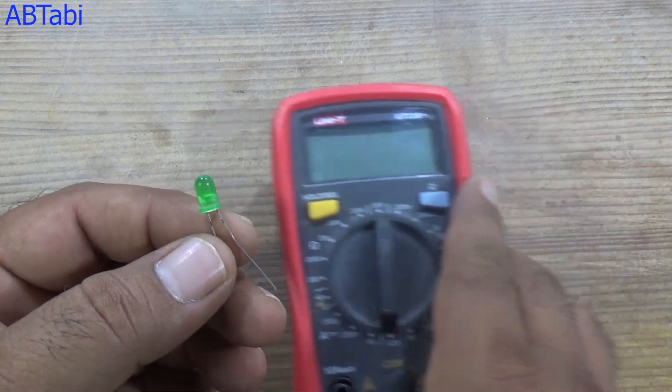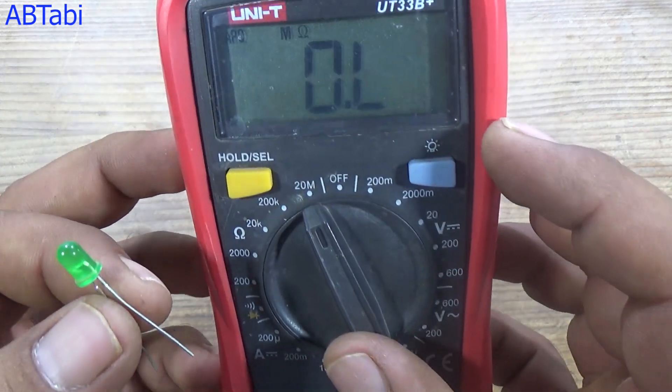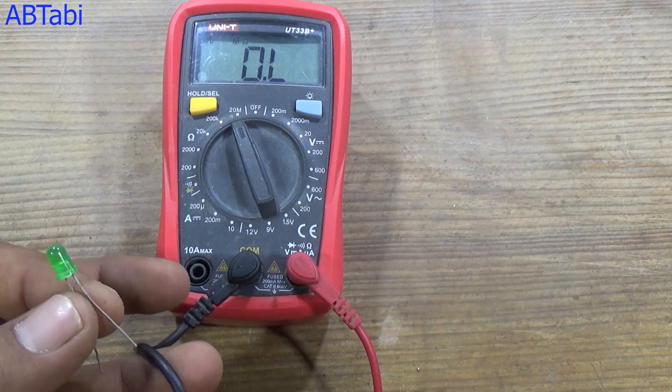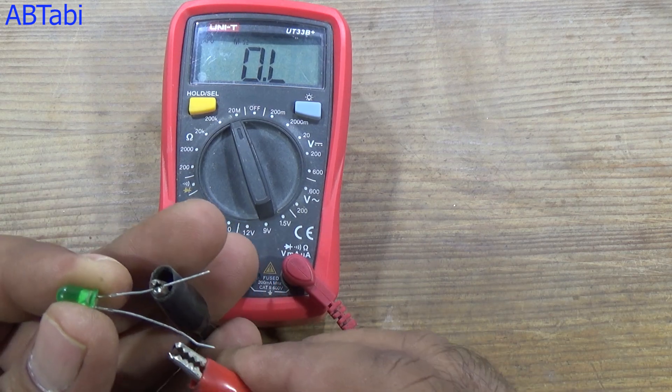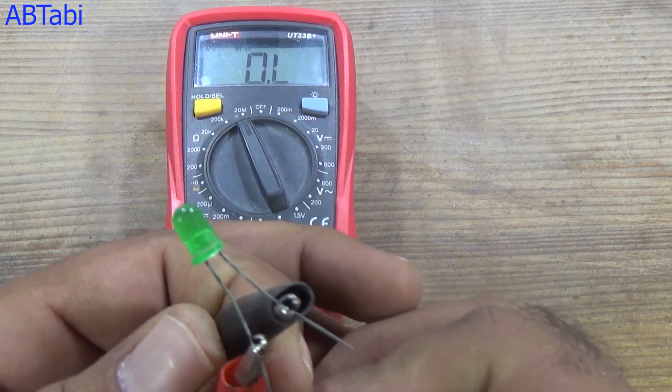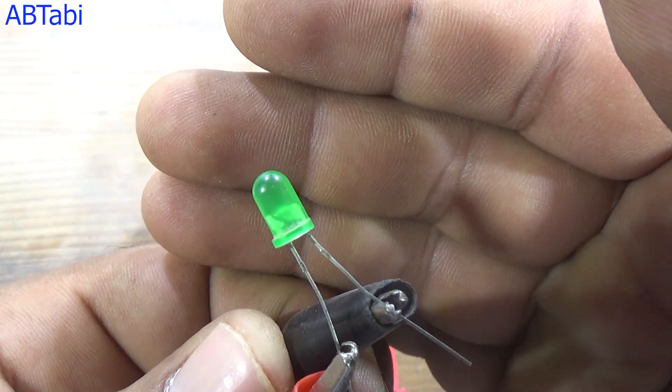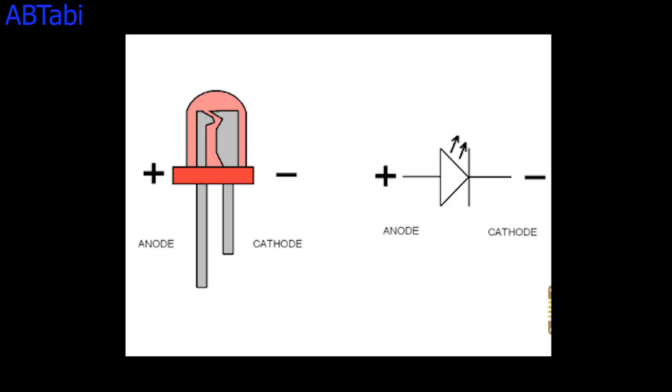As you can see, I have a simple LED light. As you know, LED lights have two pins. The light emitting diode has one pin that is anode and the other pin is cathode. The anode pin is positive and the cathode pin is negative.